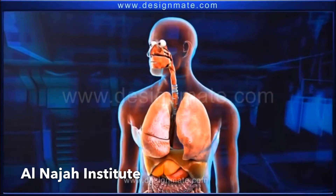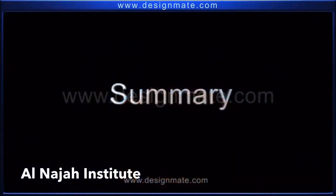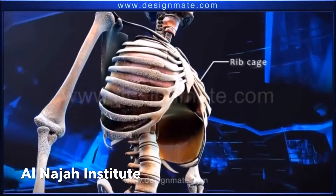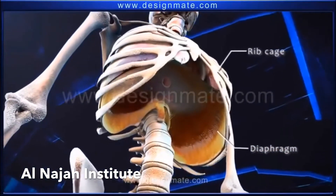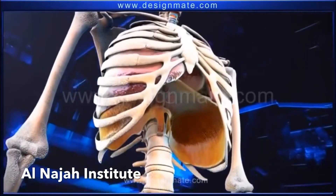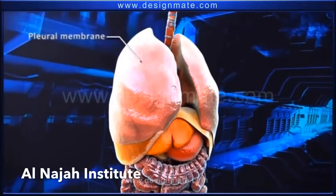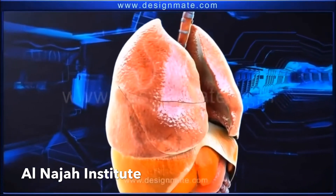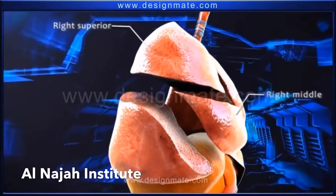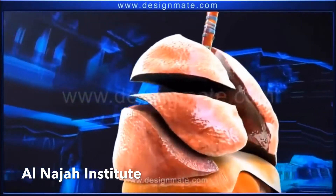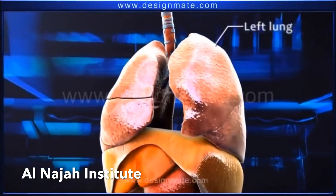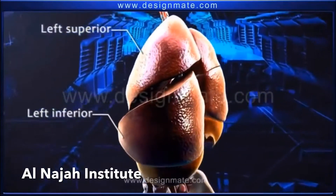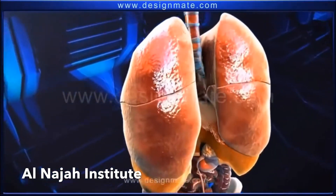This process of inhalation and exhalation is known as respiration, which occurs approximately 20 times per minute. In summary: in the thorax region, the ribcage and the diaphragm play a vital role in respiration. Present within the ribcage are the pleural membranes which enclose the lungs. The right lung consists of three lobes while the left lung has only two lobes.